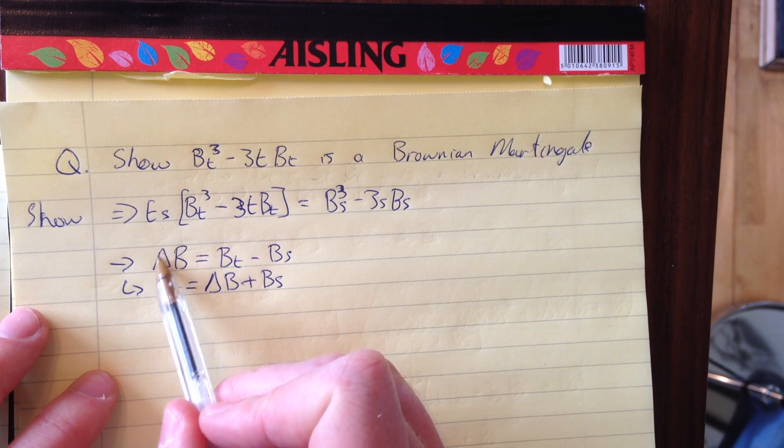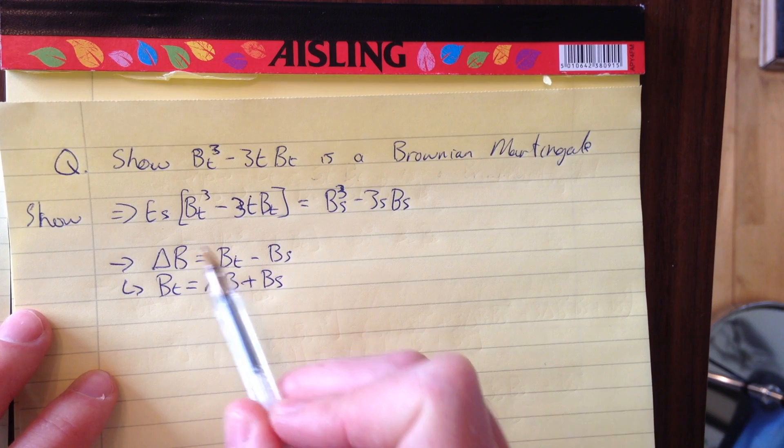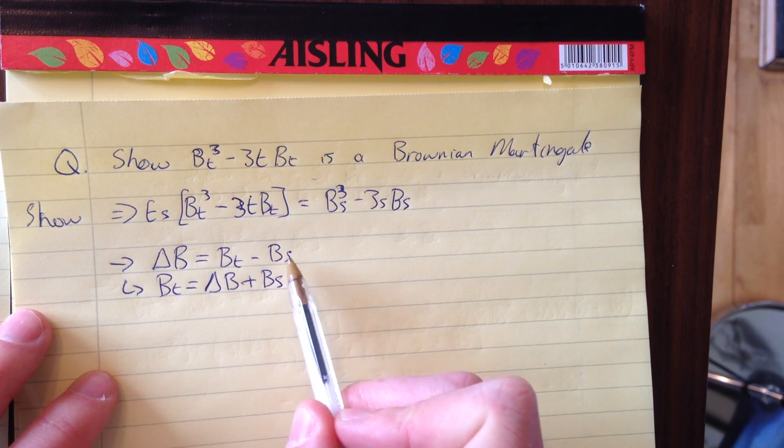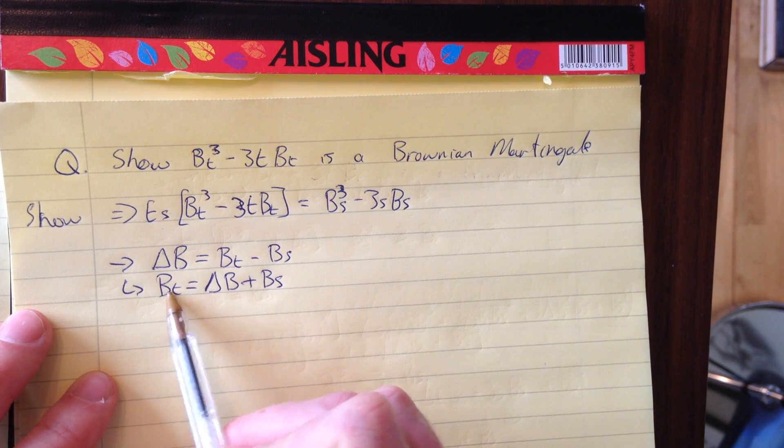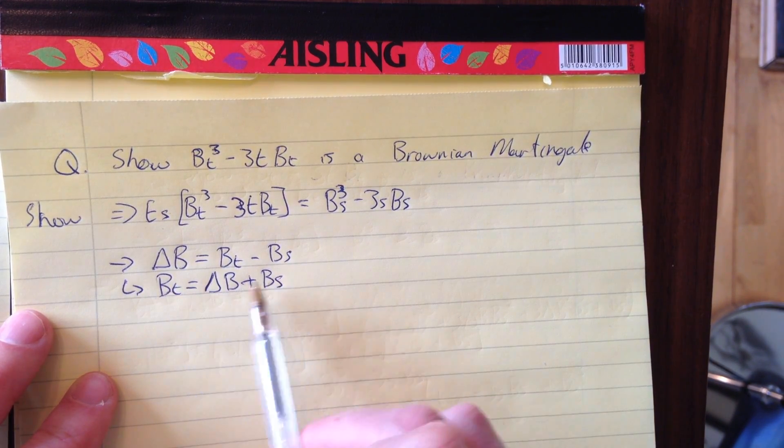To do this, we'll use this equation: the change in B, delta B, equals B_t minus B_s. Then substitute B_t = delta B + B_s. This is the important substitution. You can split these two terms up because they're independent.